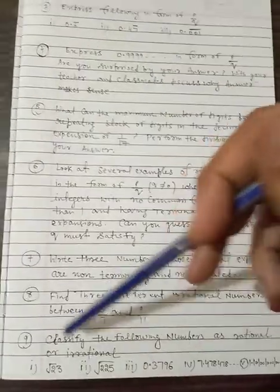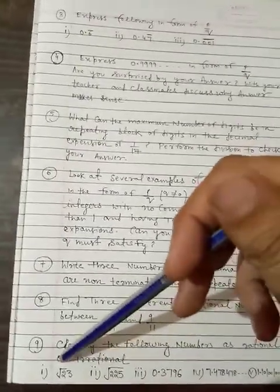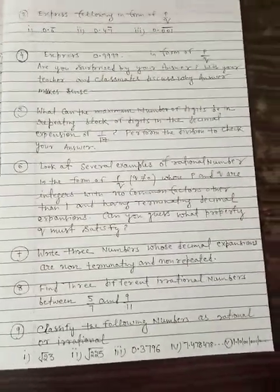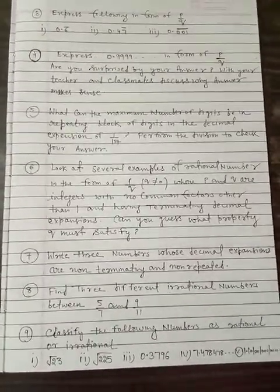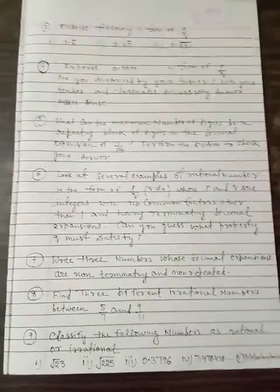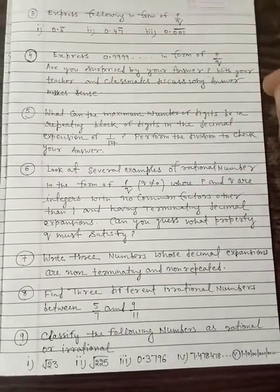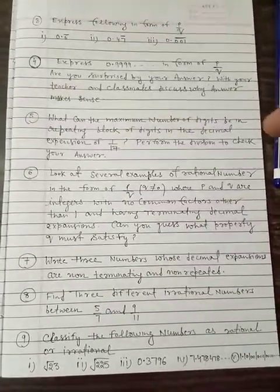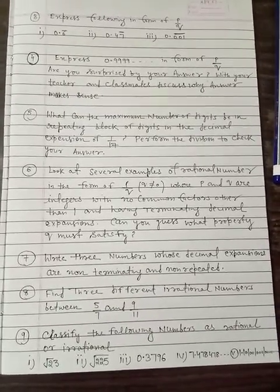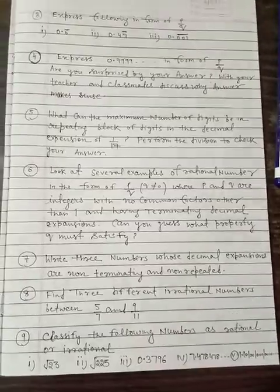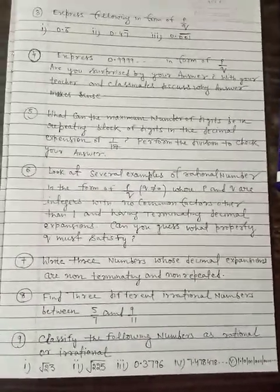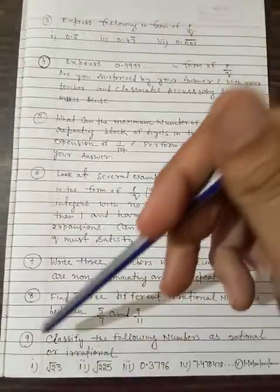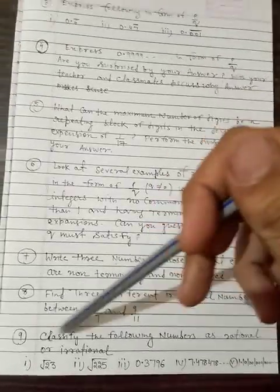Question number 9: Classify the following numbers as rational and irrational. In this, we have to tell which are rational numbers and which are irrational numbers. I have already explained to you which are rational numbers. We have learned: terminated decimal expansions are rational numbers, or non-terminated and repeated are rational numbers. Non-terminated and non-repeated are irrational numbers. So you can classify rational numbers and irrational numbers in question number 9.